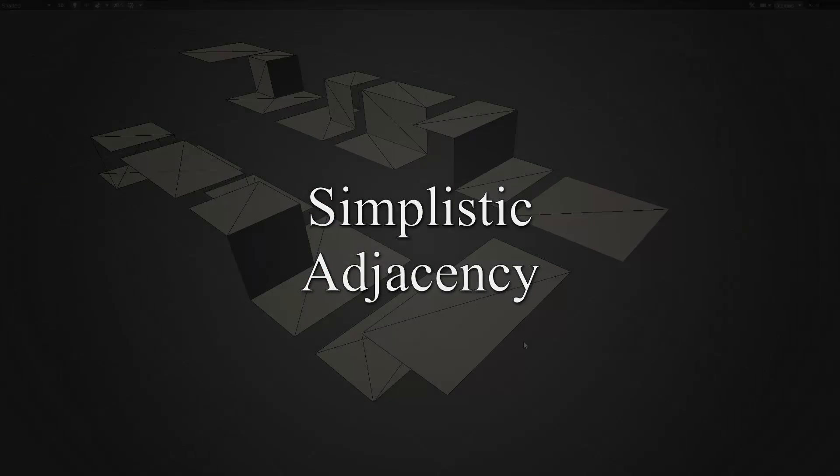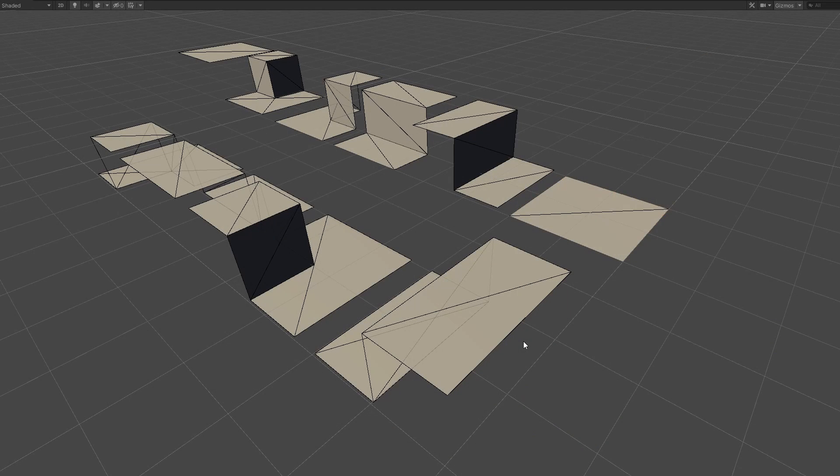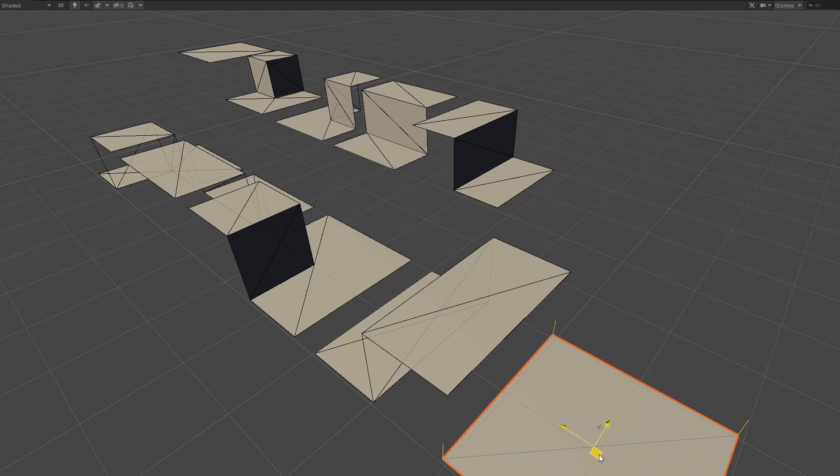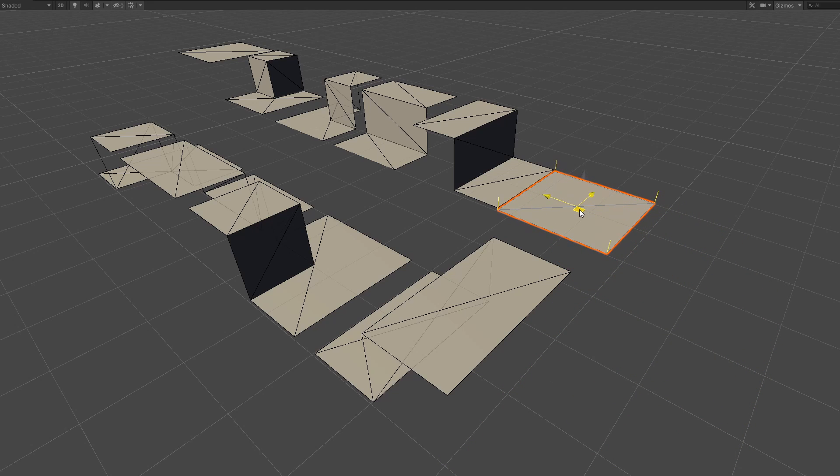In wave function collapse, each world square is chosen from a set of tiles. You have to tell wave function collapse which tiles go next to each other. For example, this wall edge piece cannot go to this flat piece. It needs a wall that faces the other direction like this.